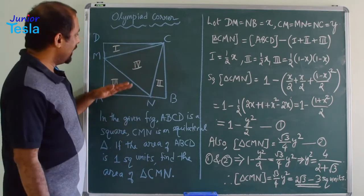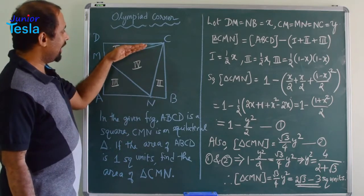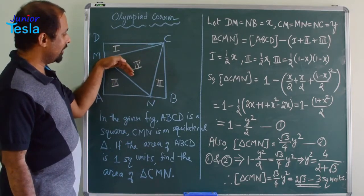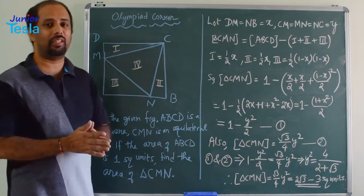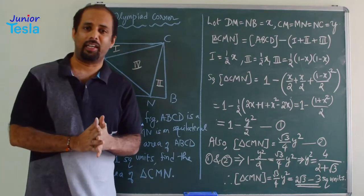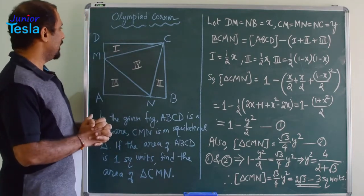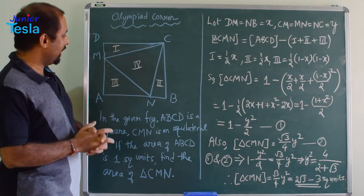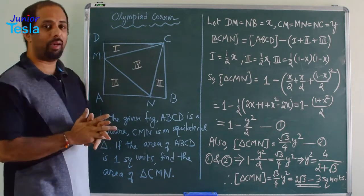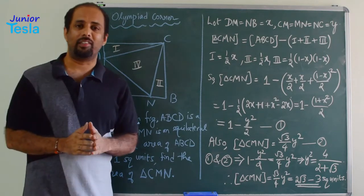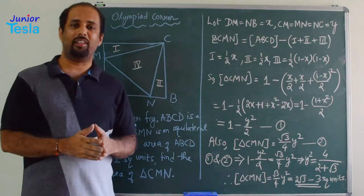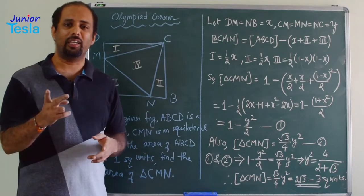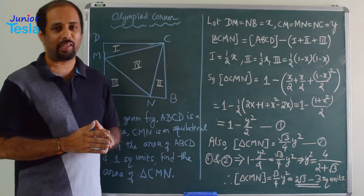Let us take the sides of the equilateral triangle as Y. So MC, CN, and MN — all three sides are taken as Y. We have introduced two unknowns: X and Y.